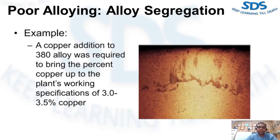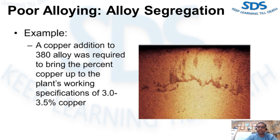Alloy segregation: this figure is an example of a poor alloying practice. A copper addition to 380 alloy was required to bring the copper content up to a plant working specification of 3 to 3.5 percent. The copper was added in the form of copper bar stock. After the furnace was sampled and approved for production, another sample from the first ladle tapped was sent to the lab, which reported a copper content of 4.5 percent. A photomicrograph revealed the segregated condition — there had not been sufficient time or stirring to get the material into solution.